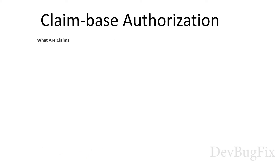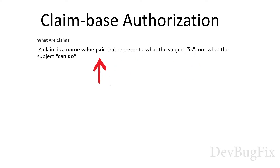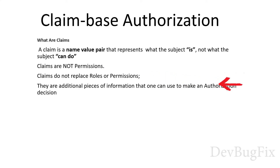What are claims? A claim is a name-value pair that represents what the subject is, not what the subject can do. Claims are not permissions. Claims do not replace roles or permissions. They are additional pieces of information that one can use to make an authorization decision.